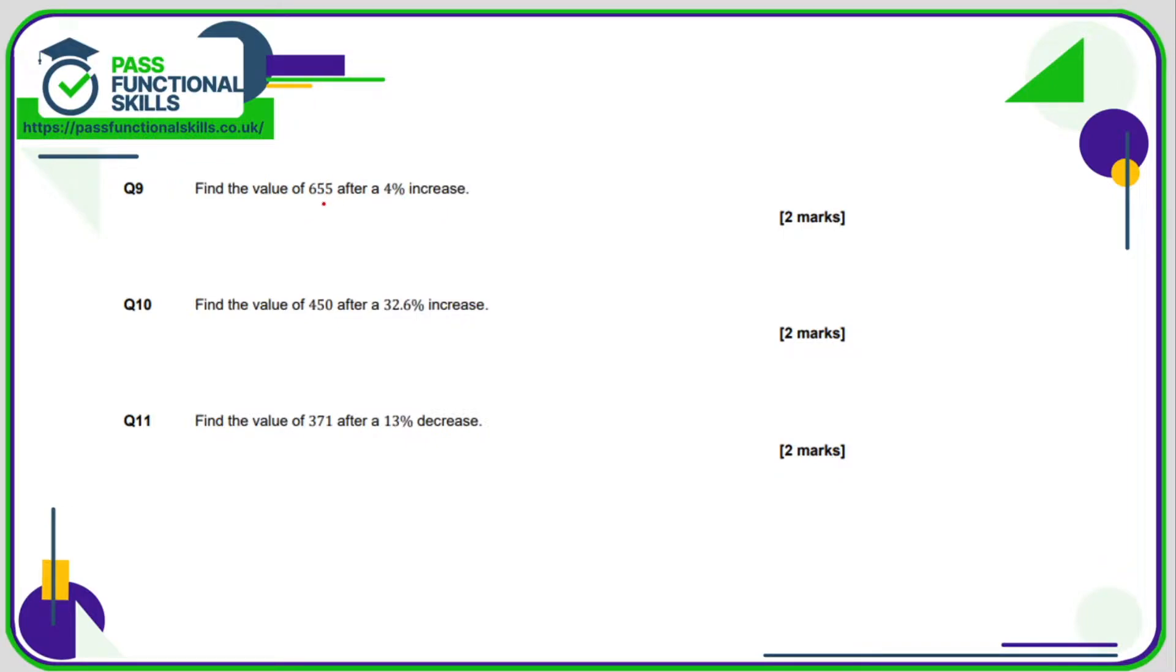Find the value of 655 after a 4% increase. So what we need to do here is work out what 4% of, well, there's a few ways you can do this actually. So for me, the easiest way is thinking about what is the multiplier for 4%. It's usually 0.04, but for an increase, we add 1 to this figure so that our multiplier is 1.04. So 655 multiplied by 1.04, and that will take me directly to 681.2.